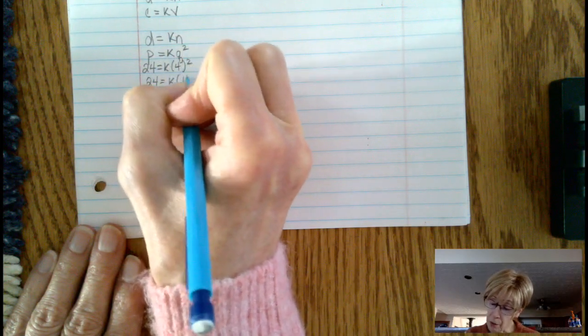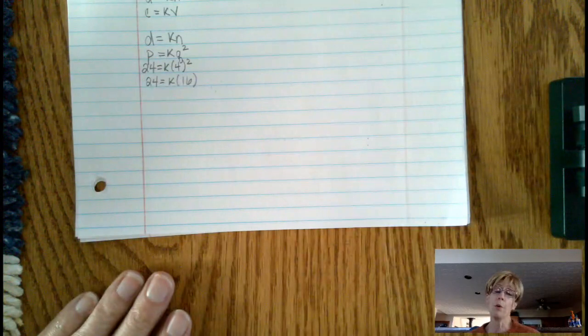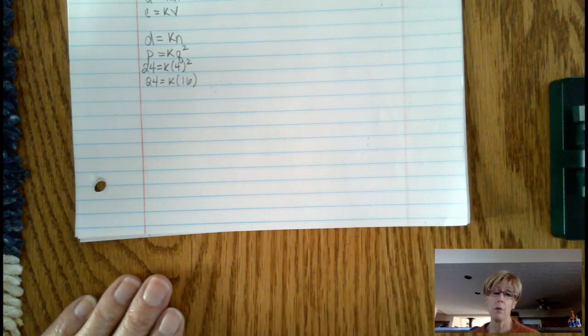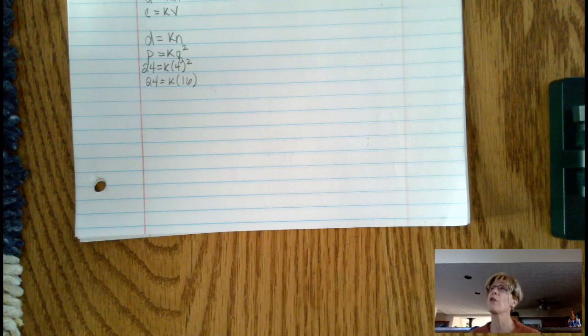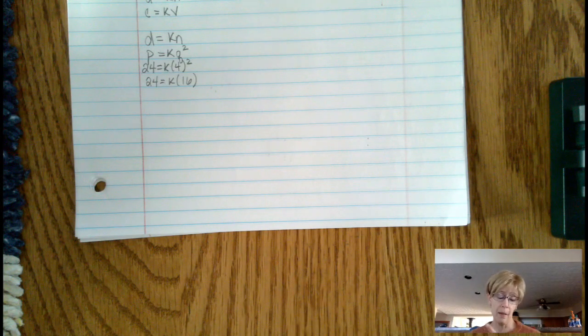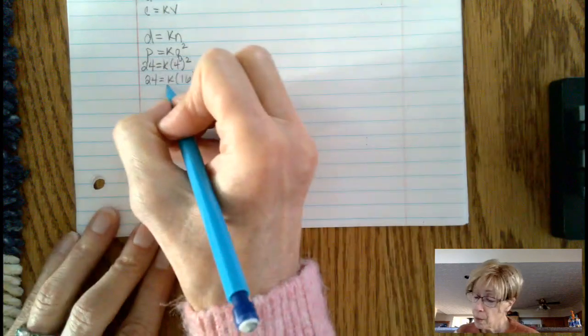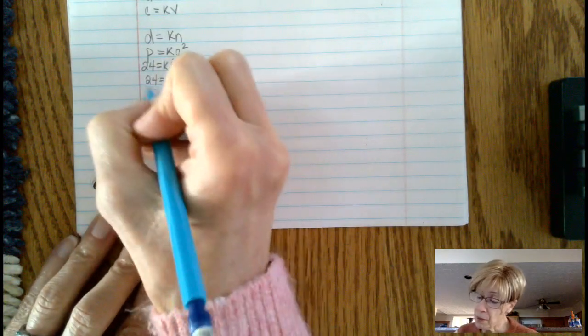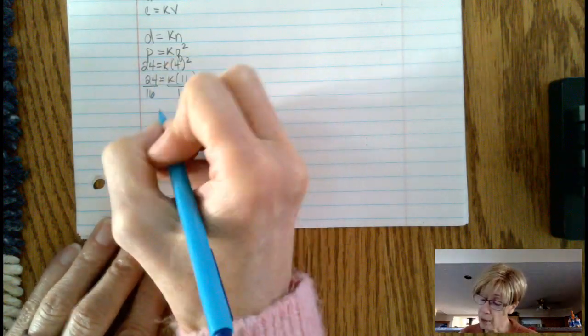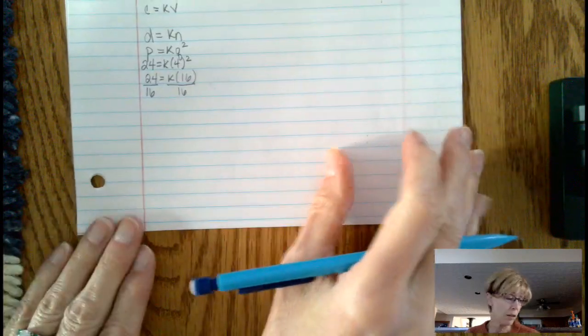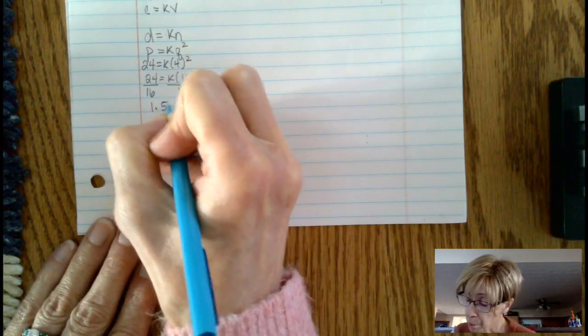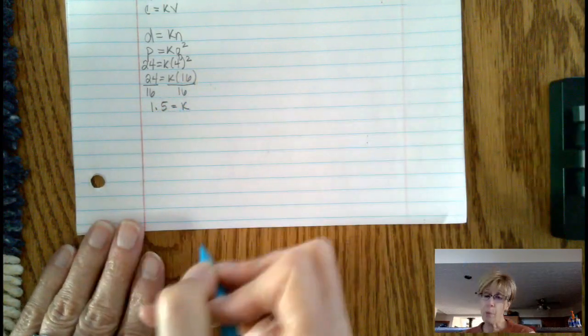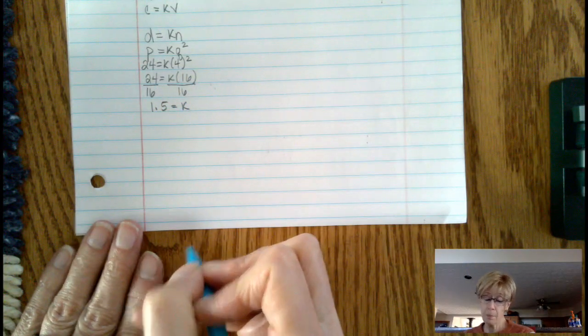What we're solving for is the constant of variation, which is the k. Then we're going to use k, because k applies for all situations in this case. We're going to divide by 16 from both sides. Use your calculator, use decimals if you can't do it in your head. I'll even use a decimal to get the 1.5.